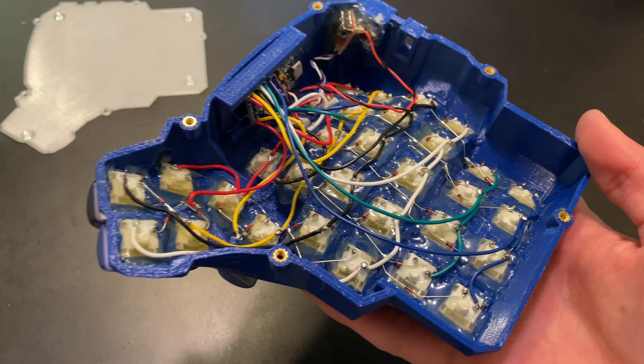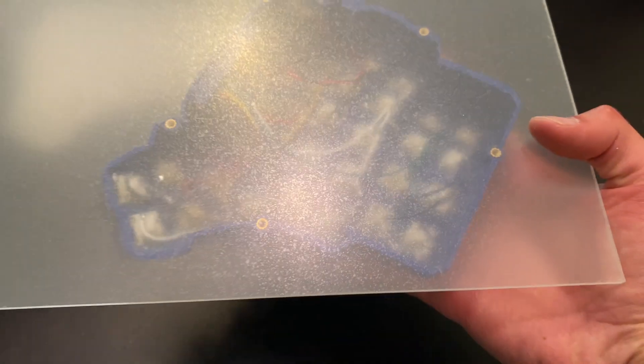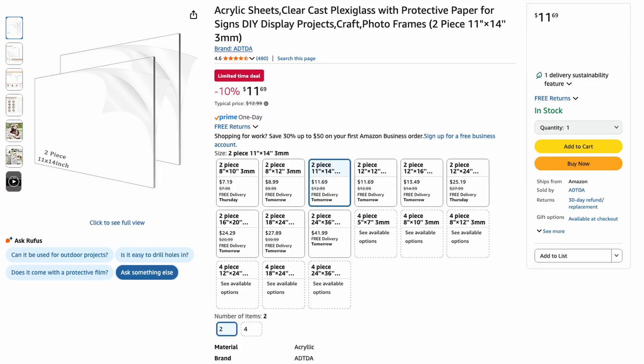I decided that a 3mm thick sheet of acrylic would be the perfect material to cut out some base plates. Luckily, not only is acrylic fairly cheap, it's also really easy to CNC with this machine.